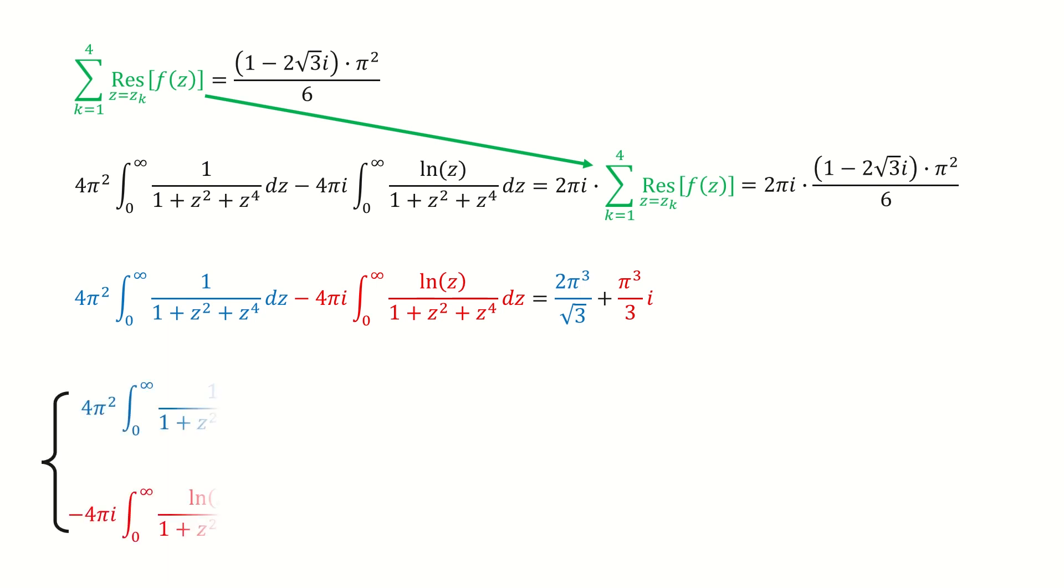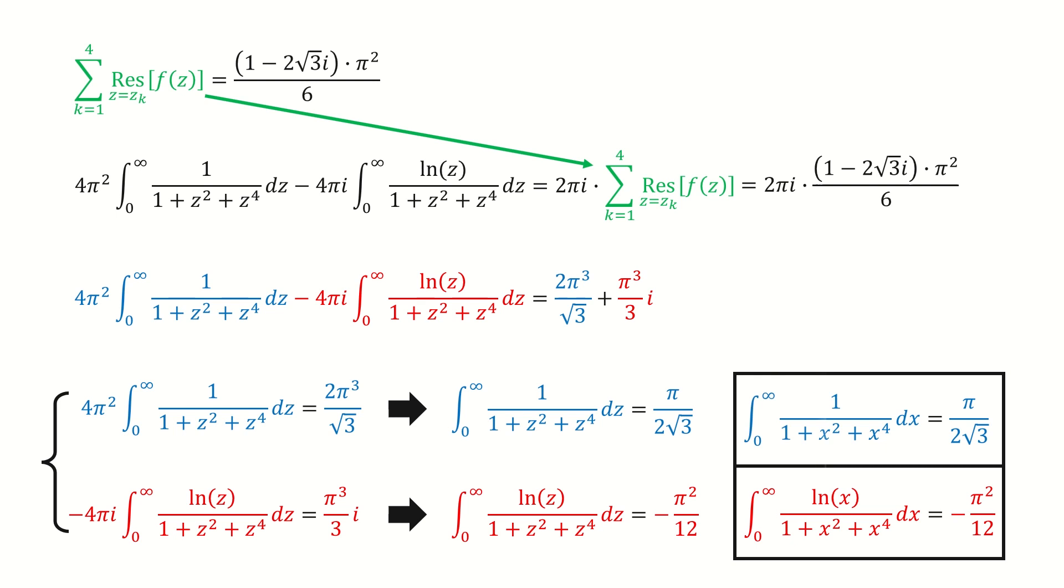And next, we just let the real part equal to the real part, which is colored in blue. And we let the imaginary part equal to the imaginary part, which is in red. So from this blue equation, after simplify it, we got here. And similarly, after simplify this red equation, we got here. And finally, we replace z by x to go back to the real domain. So we got this answer. And additionally, we got a byproduct for this integral, which is colored in blue. And don't forget to subscribe to my channel and give a like.